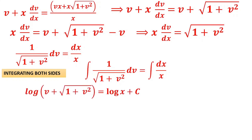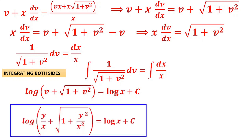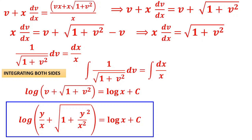Integrating Q2: ∫dv/√(1+v²) = ∫dx/x. Using the standard formula, the left side gives log(v + √(1+v²)) and the right side gives log x + c. Resubstituting v = y/x: log(y/x + √(1 + y²/x²)) = log x + c. There is a possibility of simplification by taking LCM inside the square root, or by writing the constant as log c for further simplification.